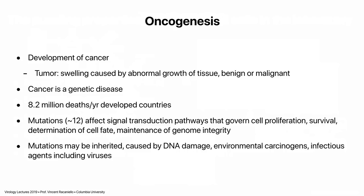You might inherit from your parents 10 of the 12 mutations, and then at some point get an insult — UV light, a chemical carcinogen — get the other two, and boom, you have cancer. Or you may inherit all 12 and die in utero. We think about 12, maybe a little more. When cells divide incessantly, the consequence is mutation. Most of your cells in your body do not divide constantly, and that's good. That way they don't sustain mutations.